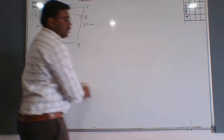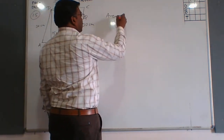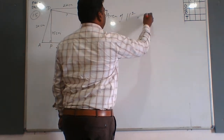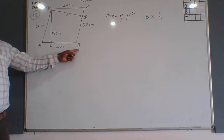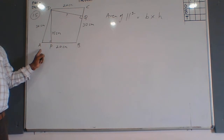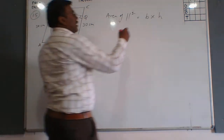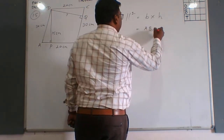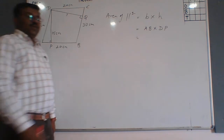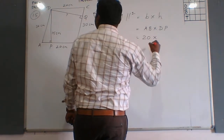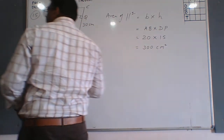This is a very simple question. We know the area of a parallelogram: the formula is base multiplied by height. If we consider the shorter side AB as the base, the height will be DP. So: Area = AB × DP = 20 × 15 = 300 cm square.